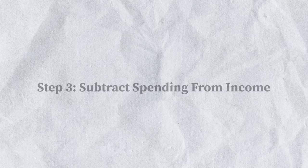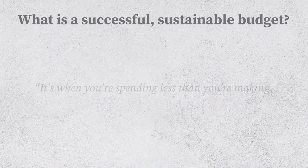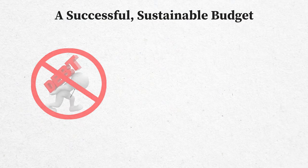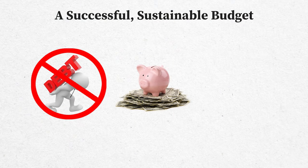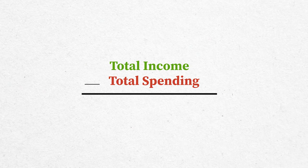Once you've filled everything out, we move on to step three: subtract spending from income. What determines a successful, sustainable budget? To put it simply, it's when you're spending less than you're making. When you spend less than you make, you don't take on debt, you can save more money, and you can achieve financial goals. All you need to do is subtract your spending from your income.